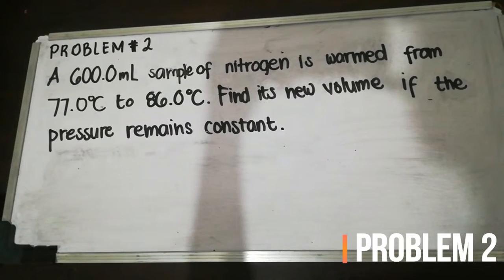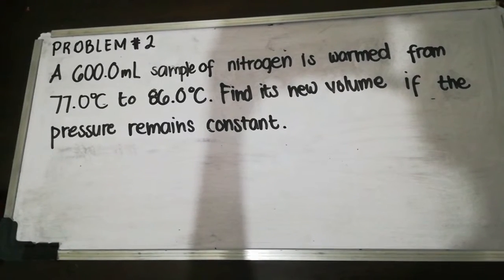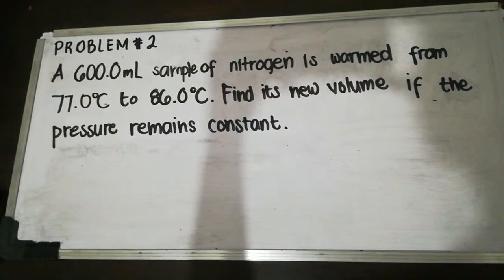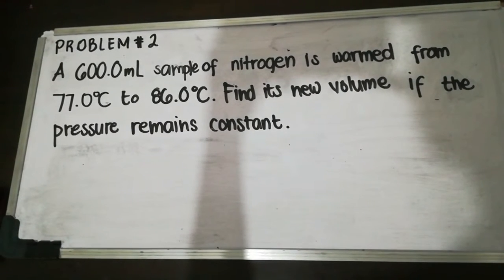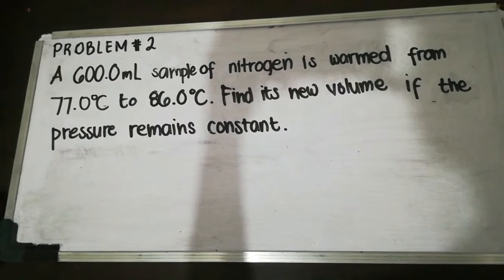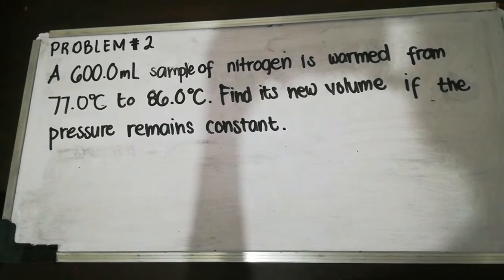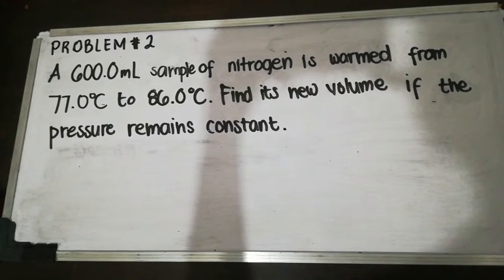In the problem, the initial volume is 600.0 milliliters. The initial temperature is 77.0 degrees Celsius, and the final temperature is 86.0 degrees Celsius. The question is, what is the final volume of nitrogen?